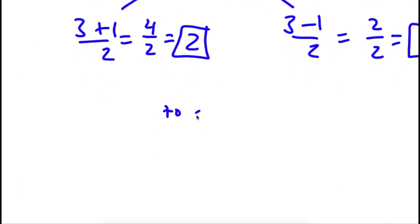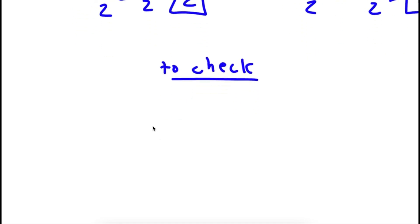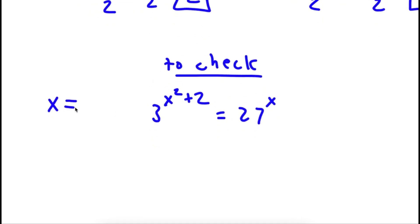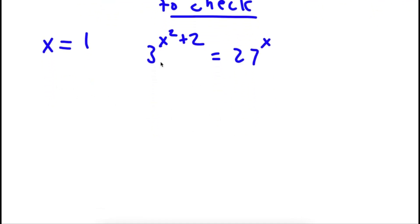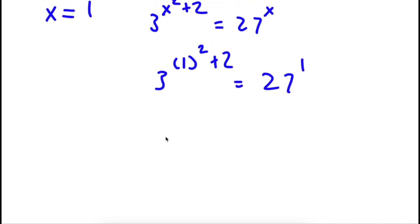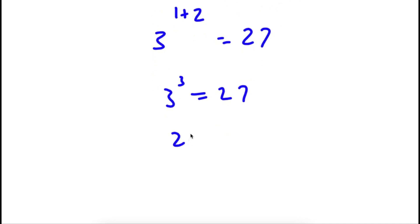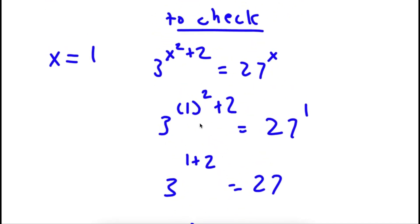Now to check — we started with 3 to the power of x squared plus 2 is equal to 27 to the power of x. Let's first try x is equal to 1. So I have 3 to the power of 1 squared plus 2 is equal to 27 to the power of 1. 1 squared is 1, so now I have 3 to the power of 1 plus 2 is equal to 27. 1 plus 2 is 3, so I have 3 to the power of 3 is equal to 27. And 3 to the power of 3 is 27, so 27 equals 27. This is right.